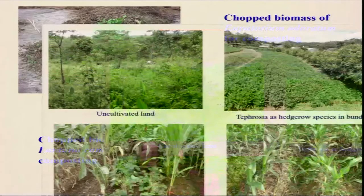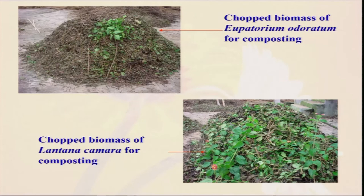Lantana camara — the pinkish-flowered plant you see everywhere on roadsides and in the jungle — has more than 3 percent nitrogen in its leaves. Simply by cutting and chopping the leaves and making a good quality compost, you can use it. Organic farming always promotes a whole farm approach, not just growing one particular crop. If we take care of crop rotation, green manure, composting, weed biomass utilization along with diversification, there is a very good chance we can grow organically without getting any yield penalty.